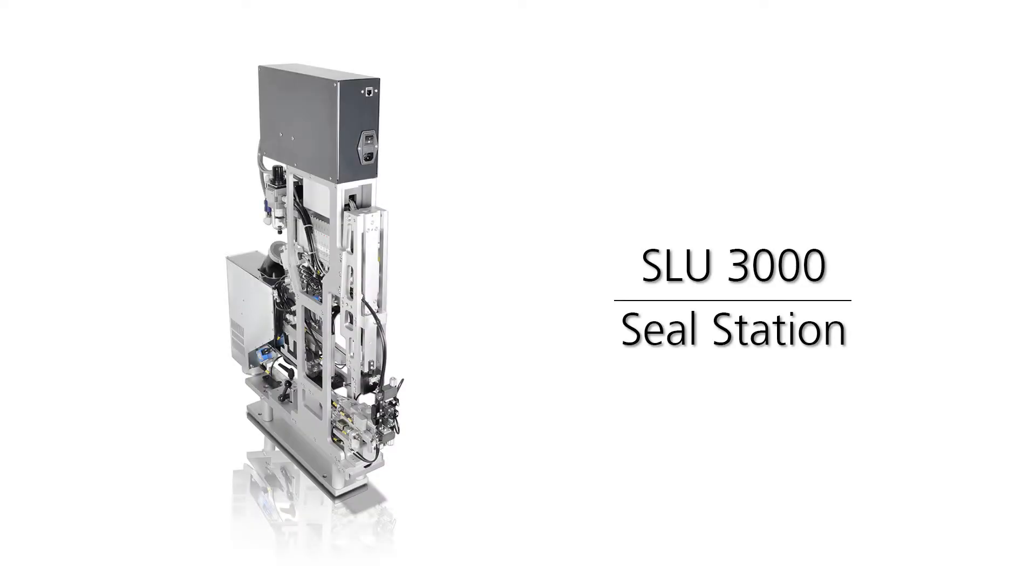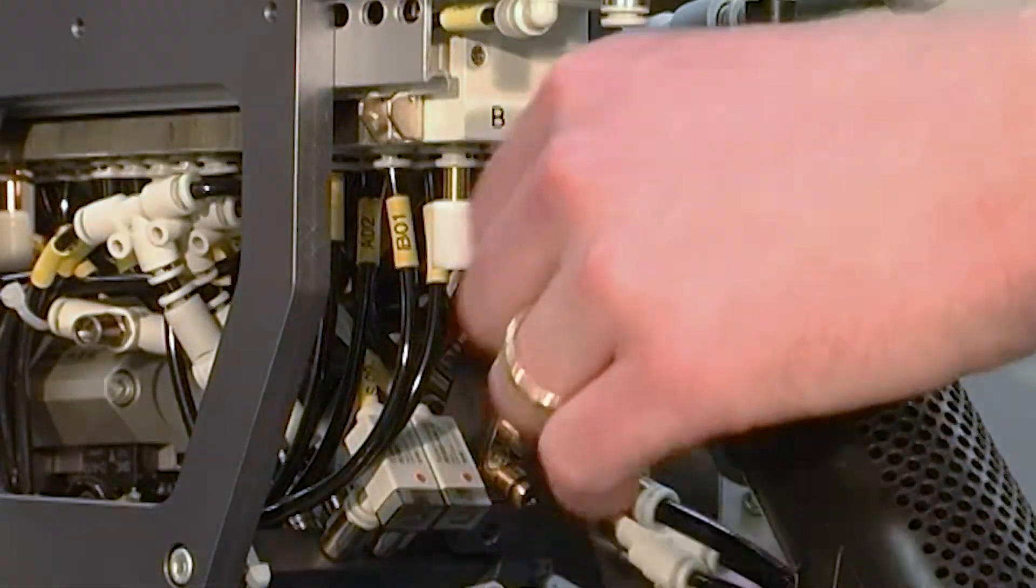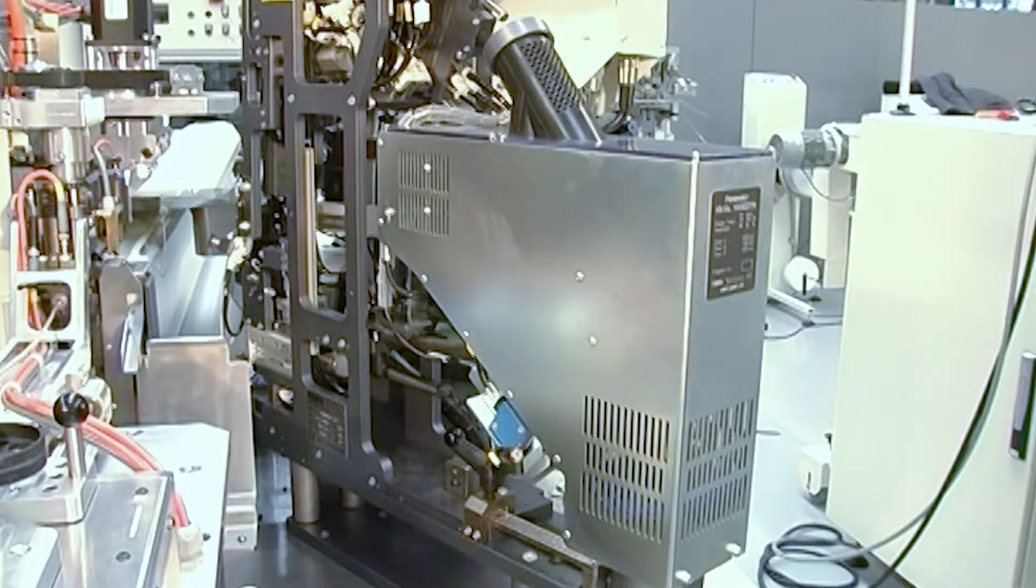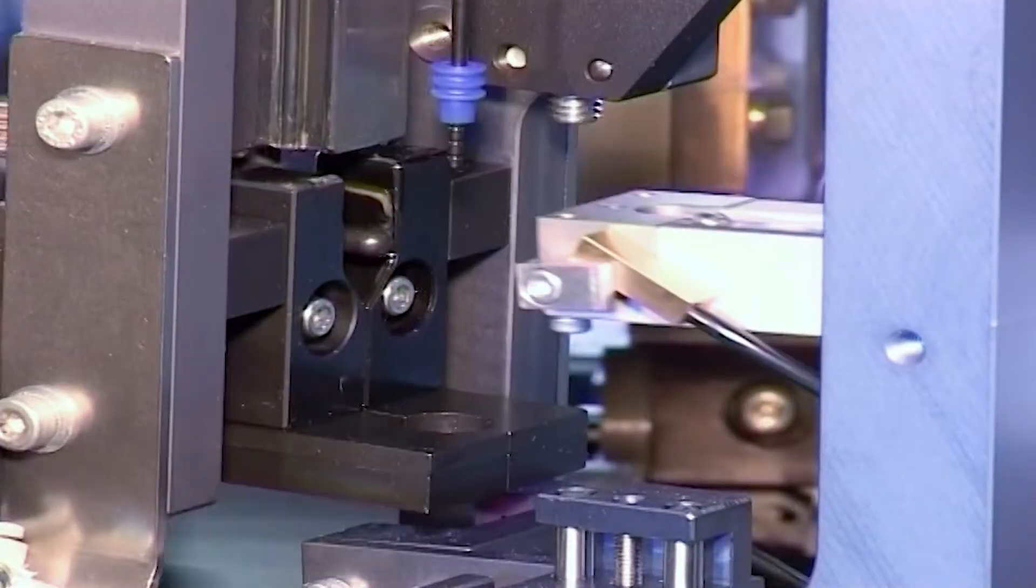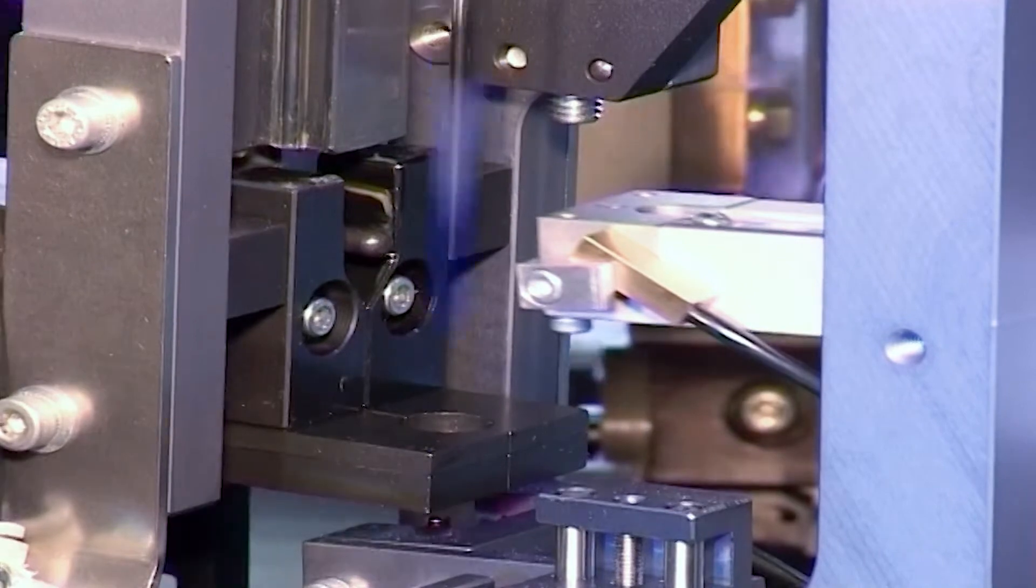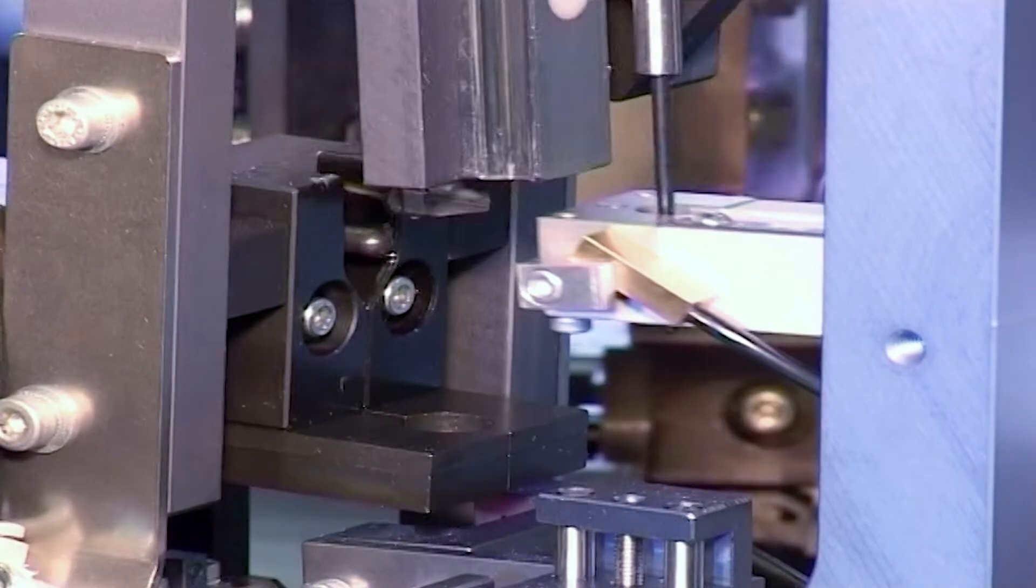The SLU-3000 automatically applies weather seals to stripped and unstripped wires before crimping and can be used on all Crimp Center fully automatic crimping machines. This compact unit with its proven technology was the original automatic seal processing station and the industry standard for well over two decades.